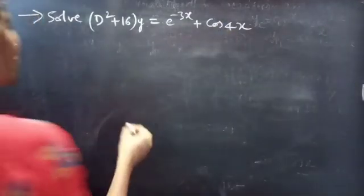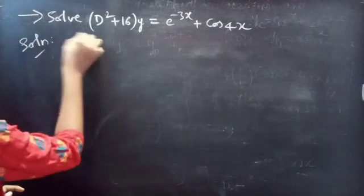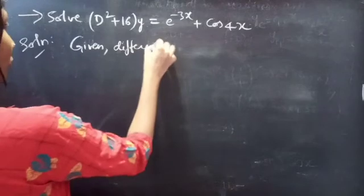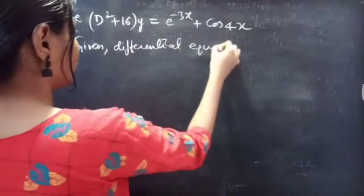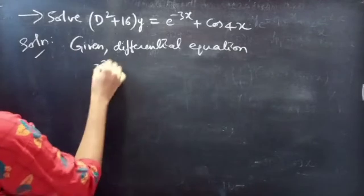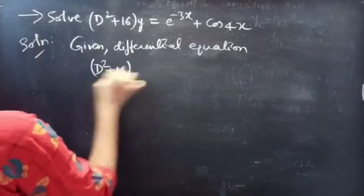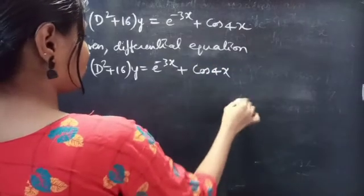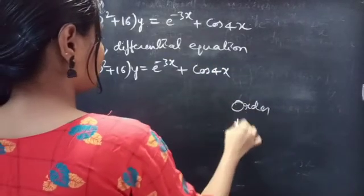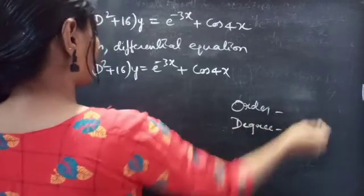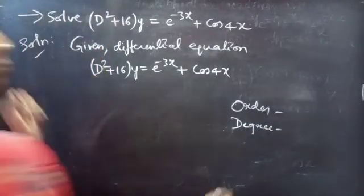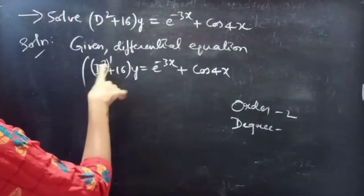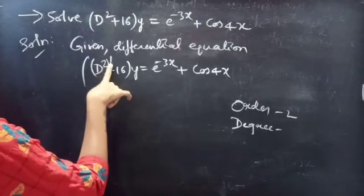Firstly, let's find the order and degree of the given differential equation. Here D² is the highest derivative, so our order will be 2. The highest power of the highest derivative is our degree, so degree is 1.